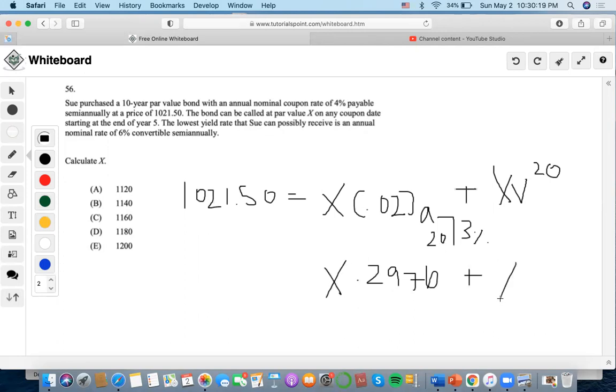Plus X times V to the 20: 0.5536, plus 0.9... 0.851275, then...